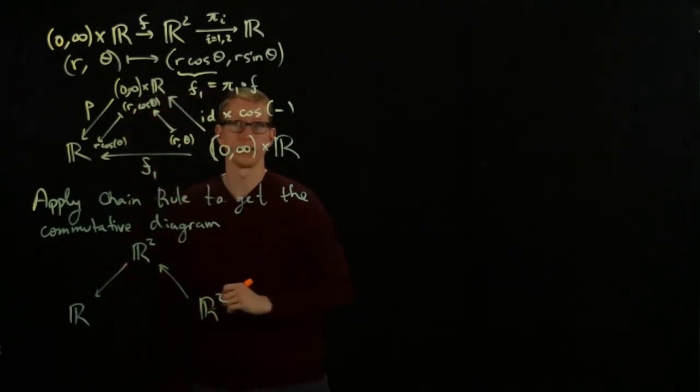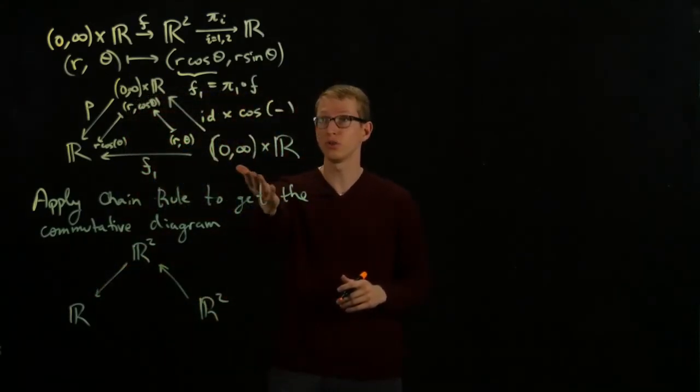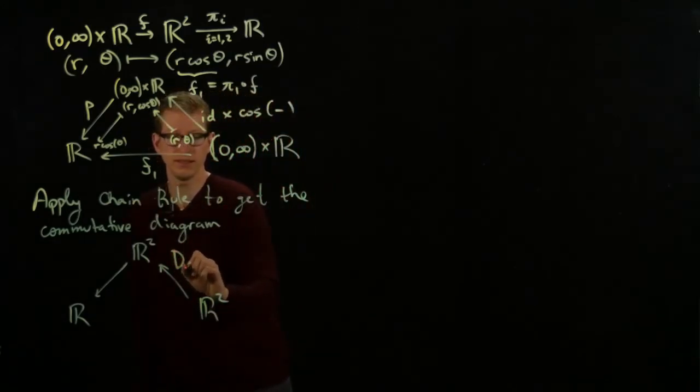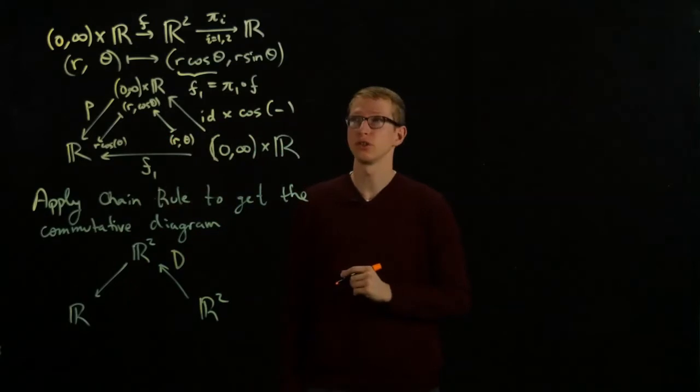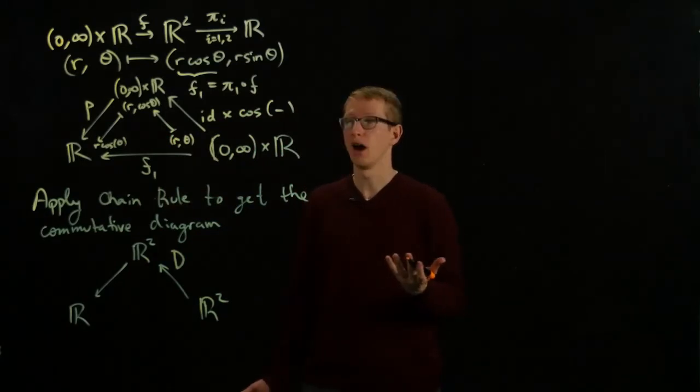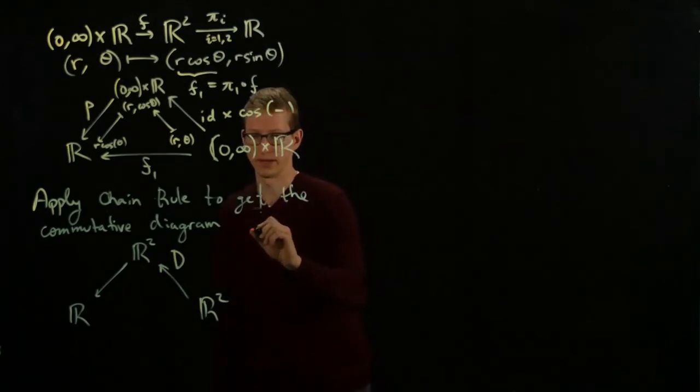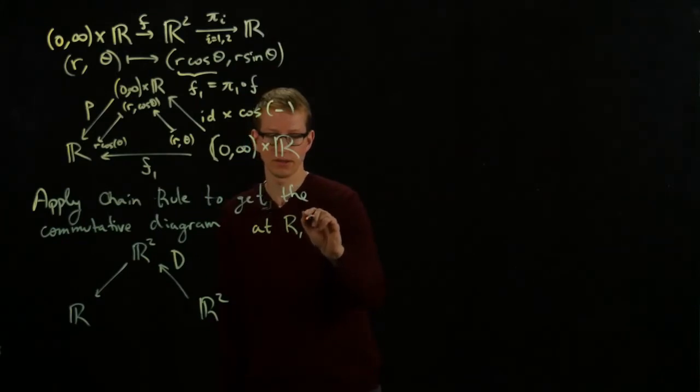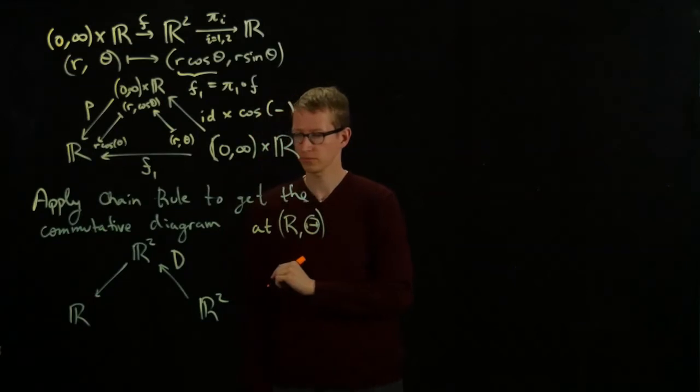These sets are open subsets of R², and so we have R² here at the bottom. This is D. Let's take this differential at an arbitrary point, capital R, capital Θ. So, let's do this at (R, Θ).